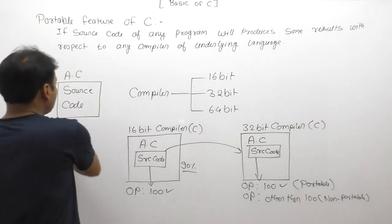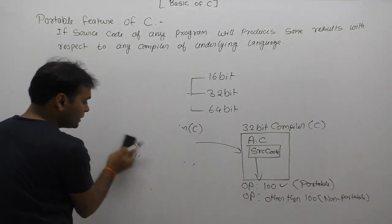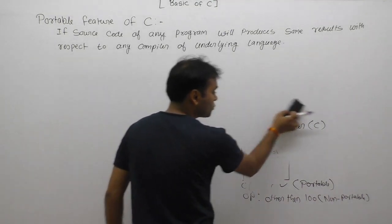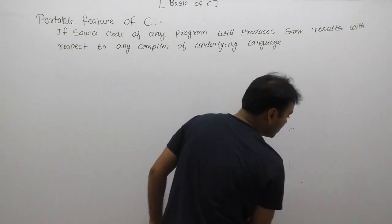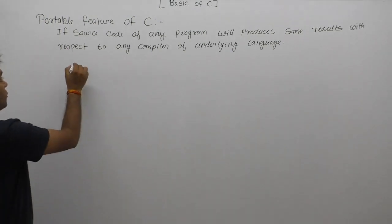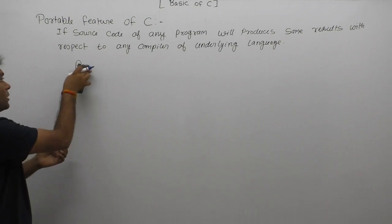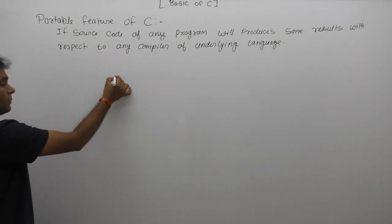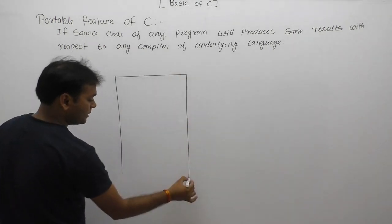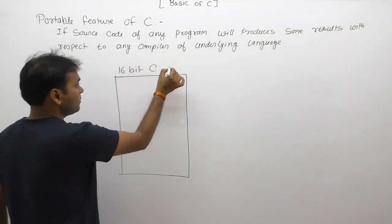Let's see some examples. First, we look at a case where C becomes non-portable, but also at the cases where C programs are portable. To test the portable feature, here we are writing code using two different compilers — the first one is a 16-bit C compiler.